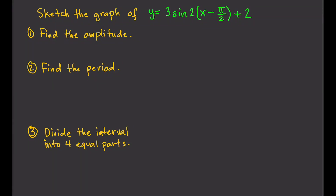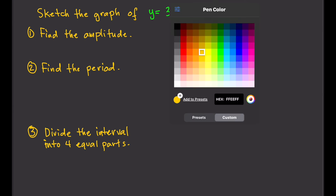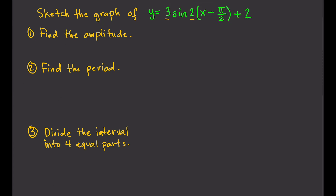Let's have another example: sketch the graph of y equals 3 sine of 2 times x minus pi over 2, plus 2. This is a more general example — it features parameters a, b, c, and d, so this is the general form for sine.